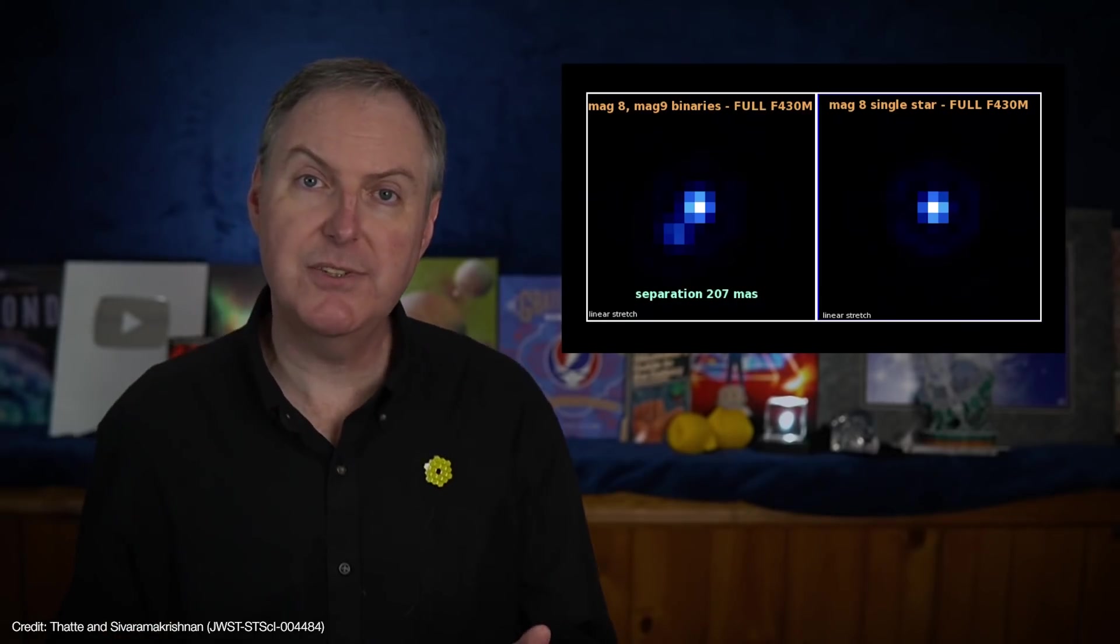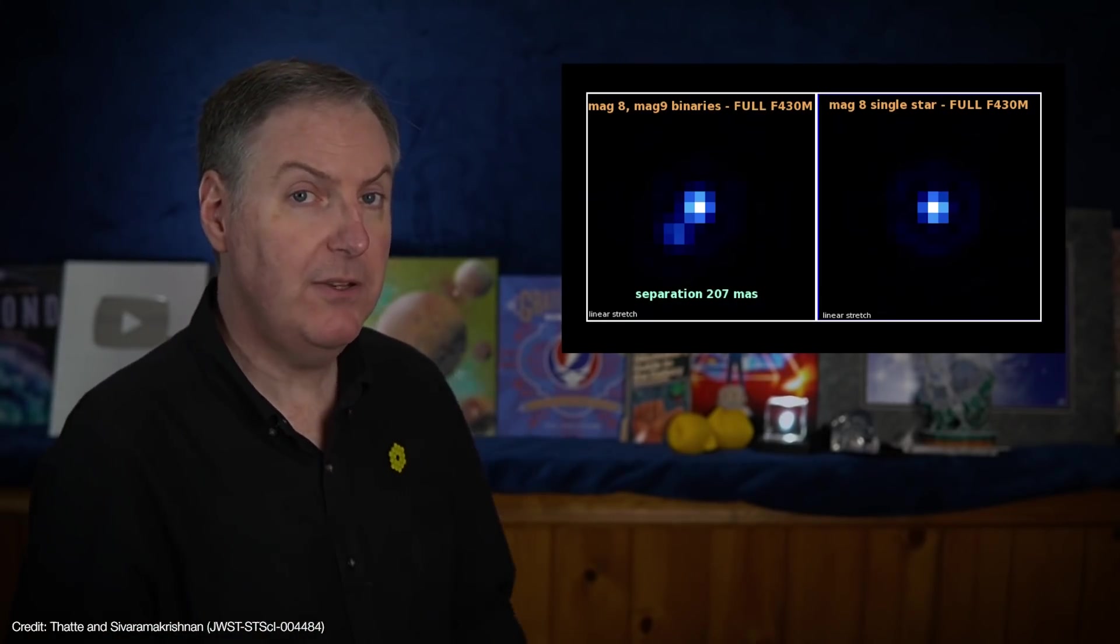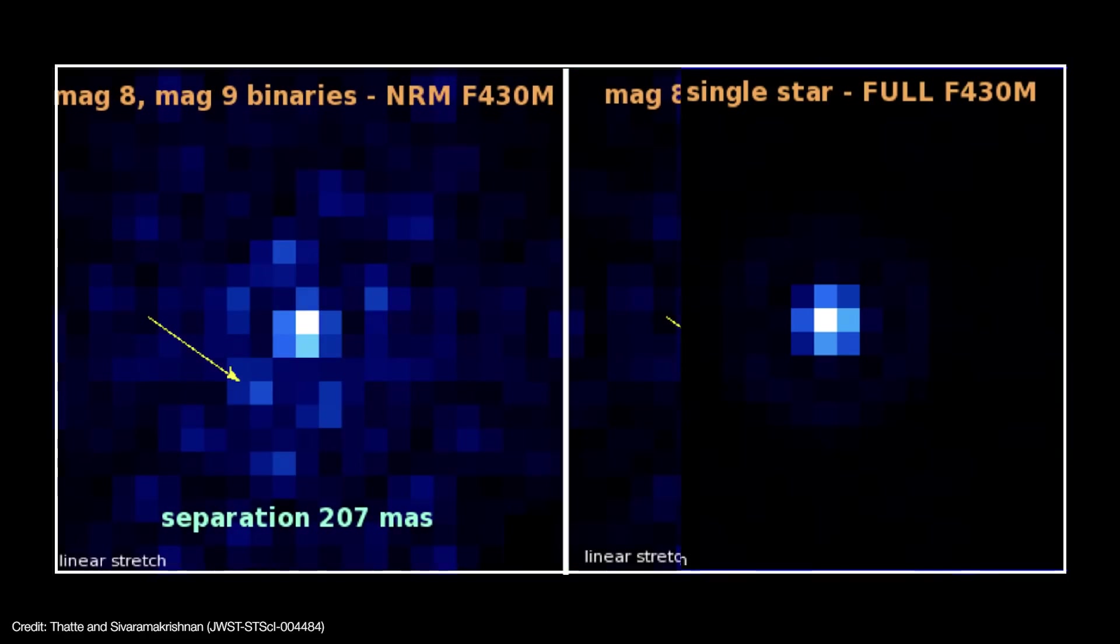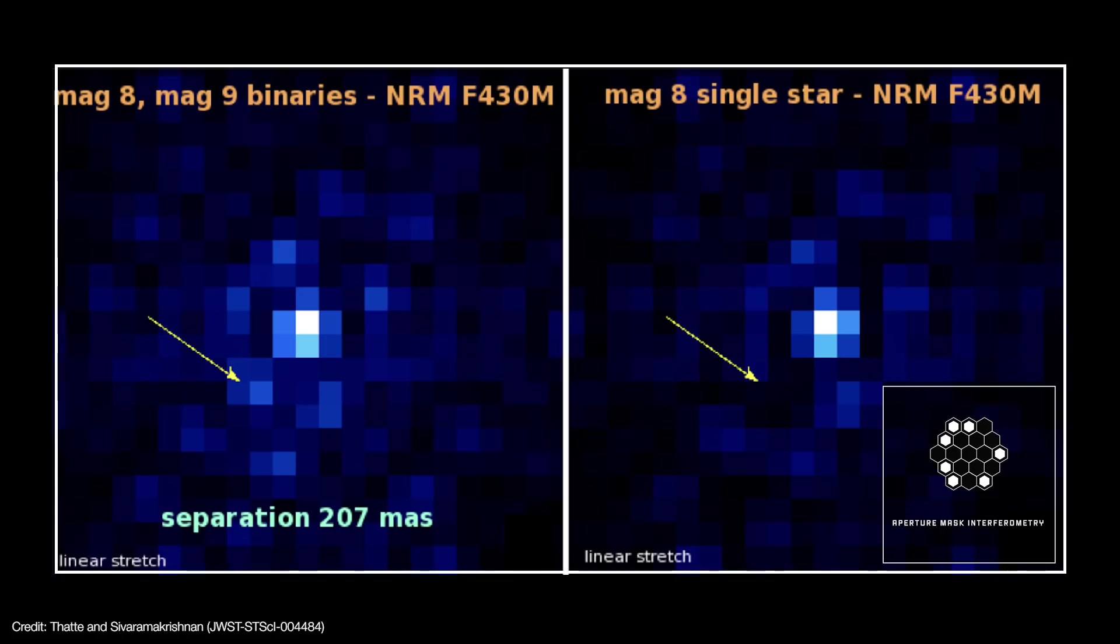But which pixels correspond to the actual positions of each star? Well, the two stars are too close together for Webb's coronagraphs to be of any use. But when NIRISS operates in AMI mode, the exact position of the companion star is revealed.